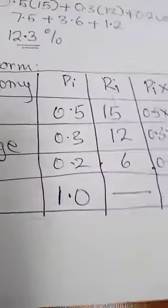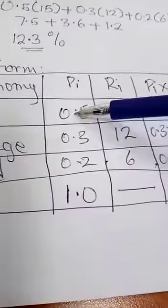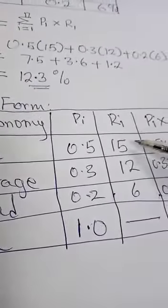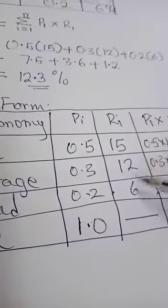Then you have the probability, as is given in the question. Probabilities are always adding up to 1. Then you have 15 for the first return, 12 and 6.